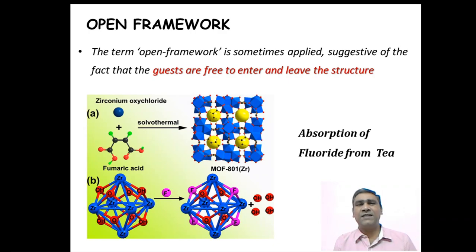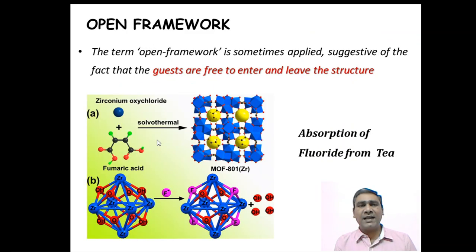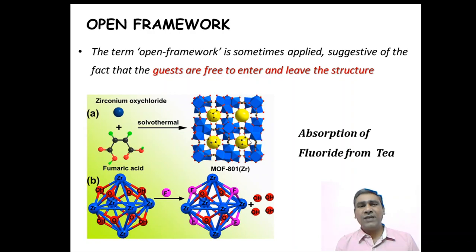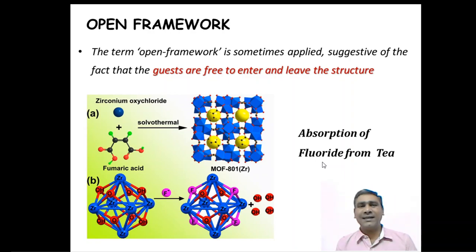An open framework suggests that guests are free to enter and leave the structure. A typical example here is zirconium oxychloride reacted with fumaric acid via solvothermal reaction to give a zirconium-based metal organic framework called MOF-801. This MOF can absorb fluoride ions — the fluoride ions can enter or leave through the channels with no degradation; the channels remain robust.